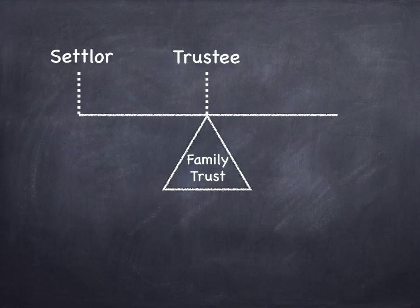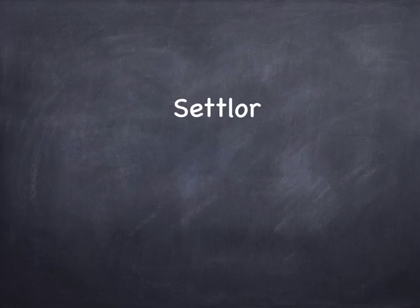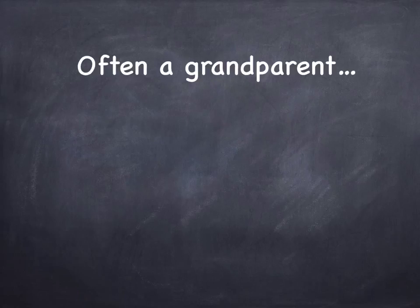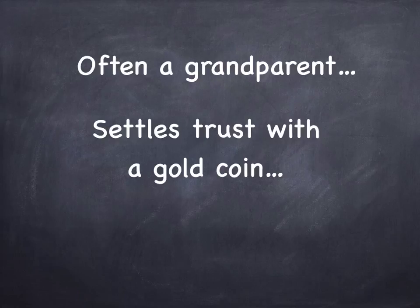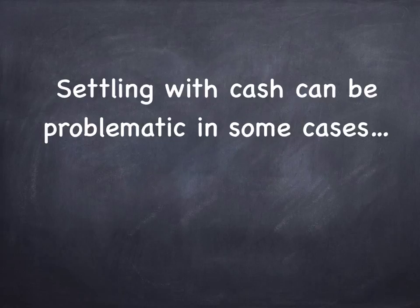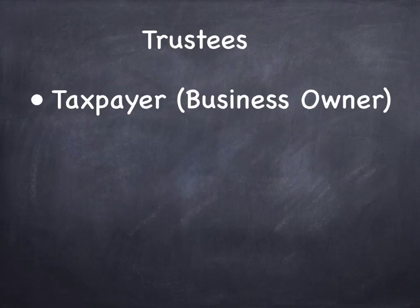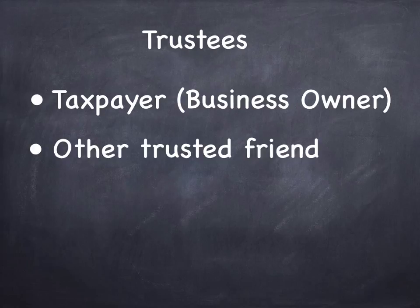If there are three parties — settlor, trustee, and beneficiary — let's take a closer look at all three. The settlor is typically a close friend or a relative, often a grandparent, and they'll settle the trust with a gold coin. Settling with cash can be problematic in some cases, so tax practitioners tend to avoid it if possible. Trustees are typically the taxpayer themselves, the business owner, and other trusted friends.